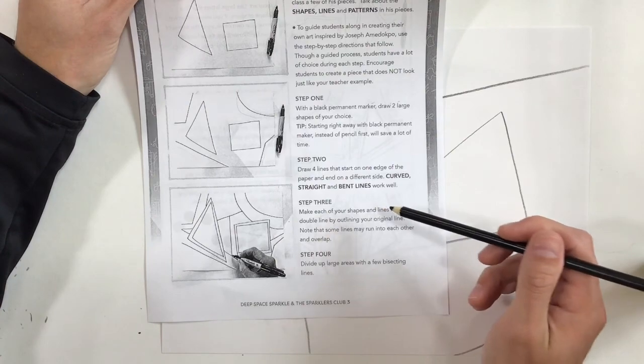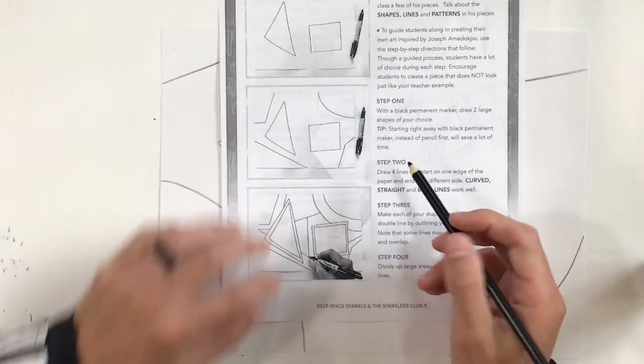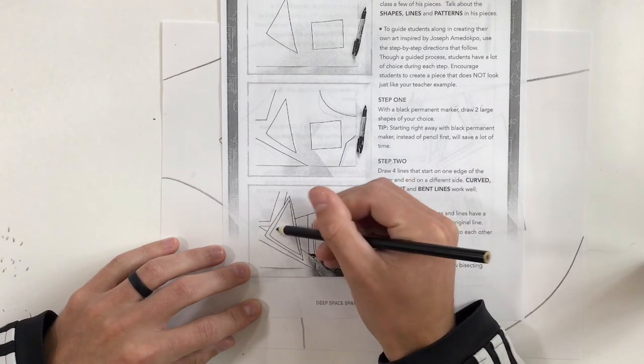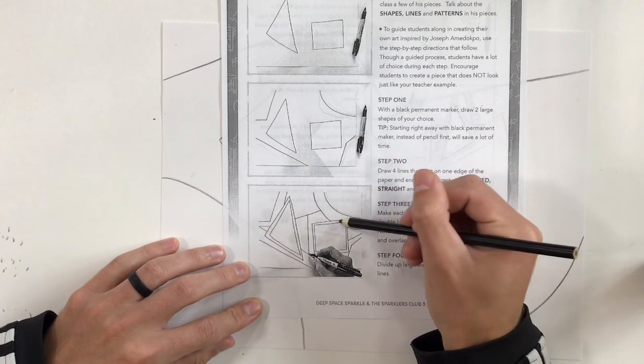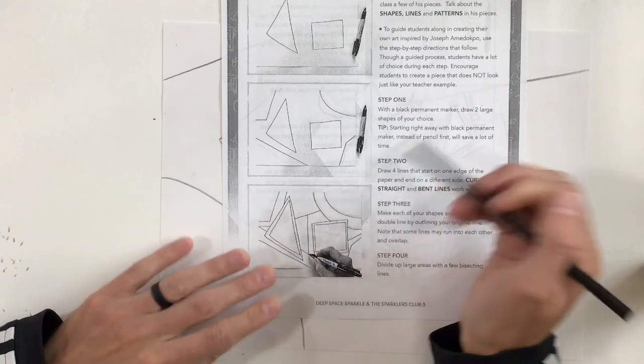Step three, make each of your shapes and lines have a double line by outlining your original line. So here you can see they did a triangle, then they did another triangle, they did that curved line, and they did another curved line. Notice sometimes they overlap, so then you have to make one shape kind of disappear underneath the other.